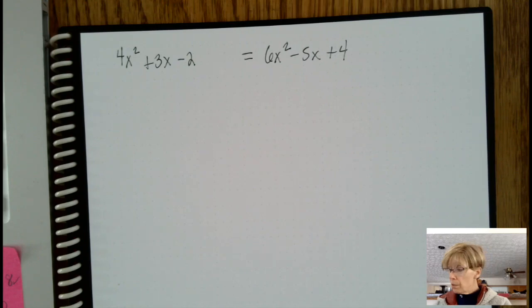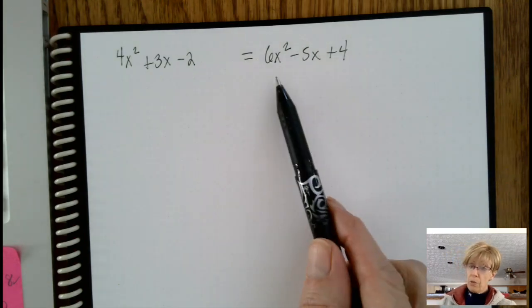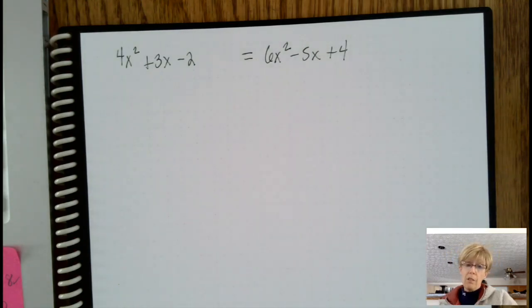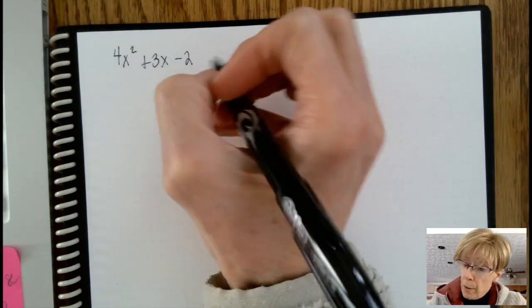So what we're trying to figure out is, if we add something to 4x squared plus 3x minus 2, what are we adding to that to get the 6x squared minus 5x plus 4.